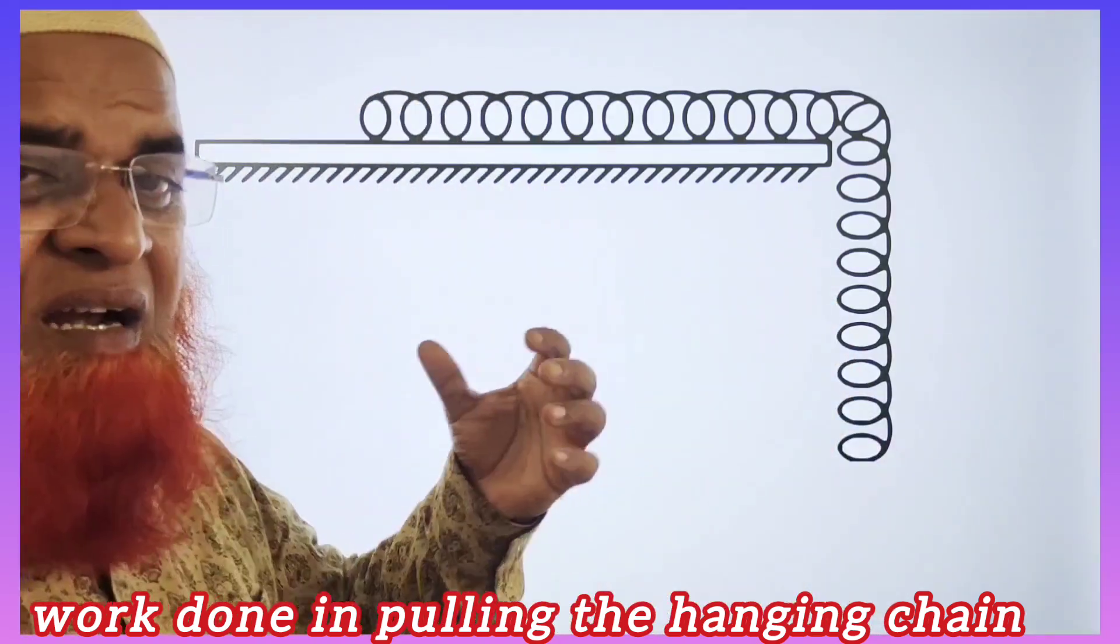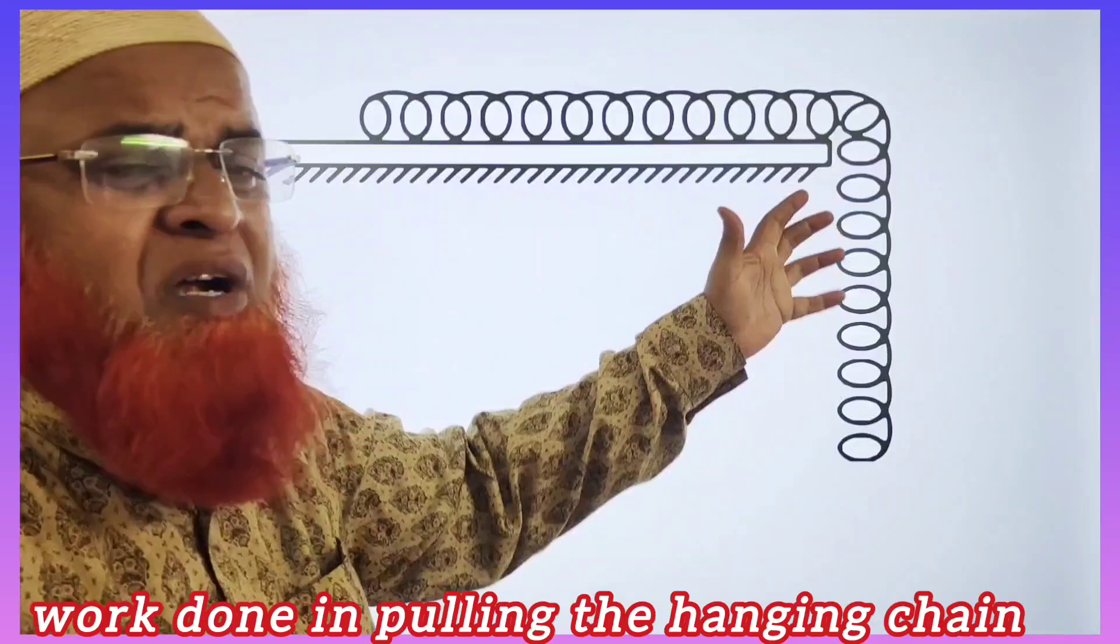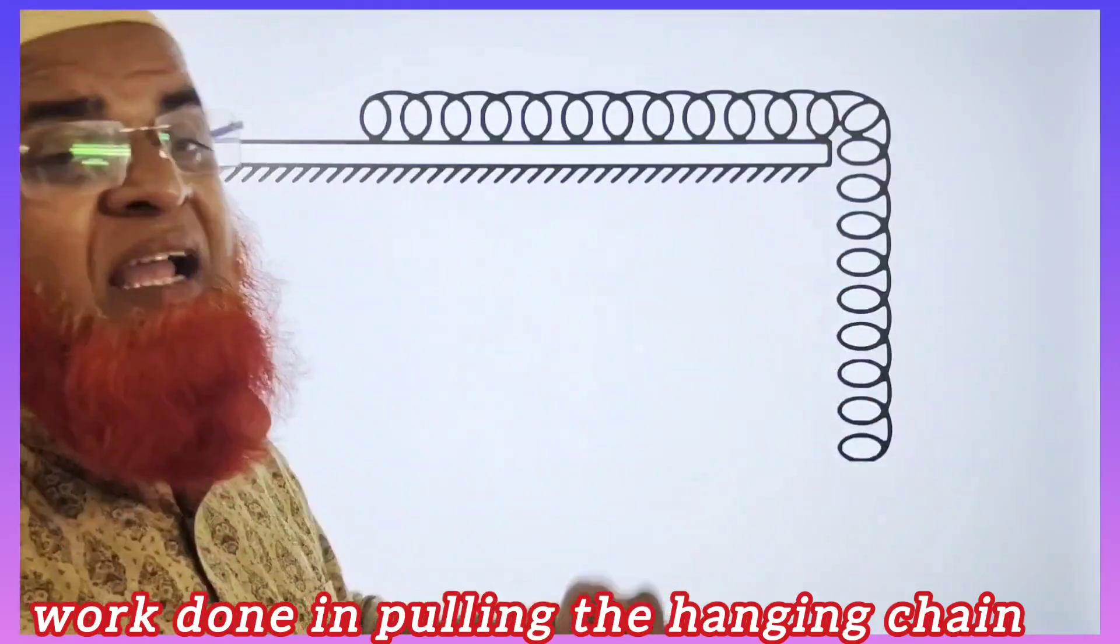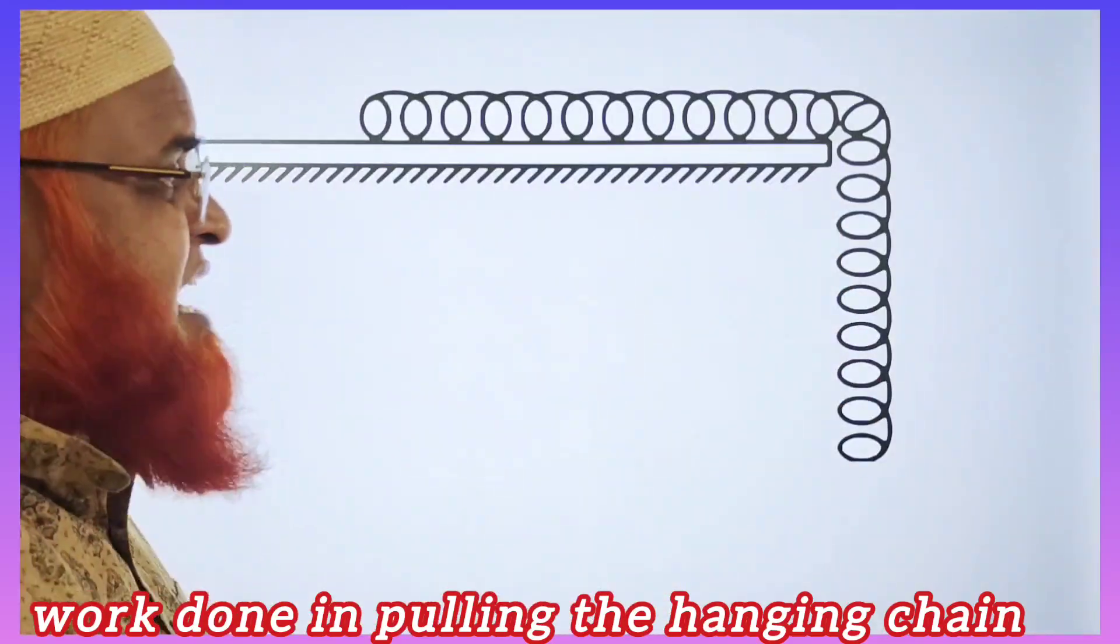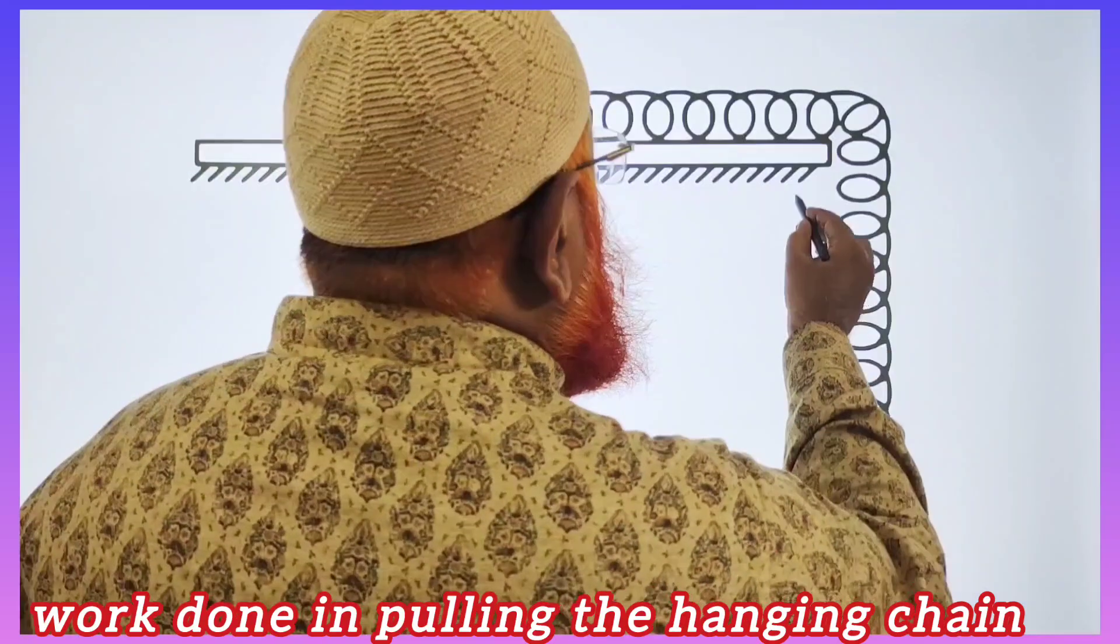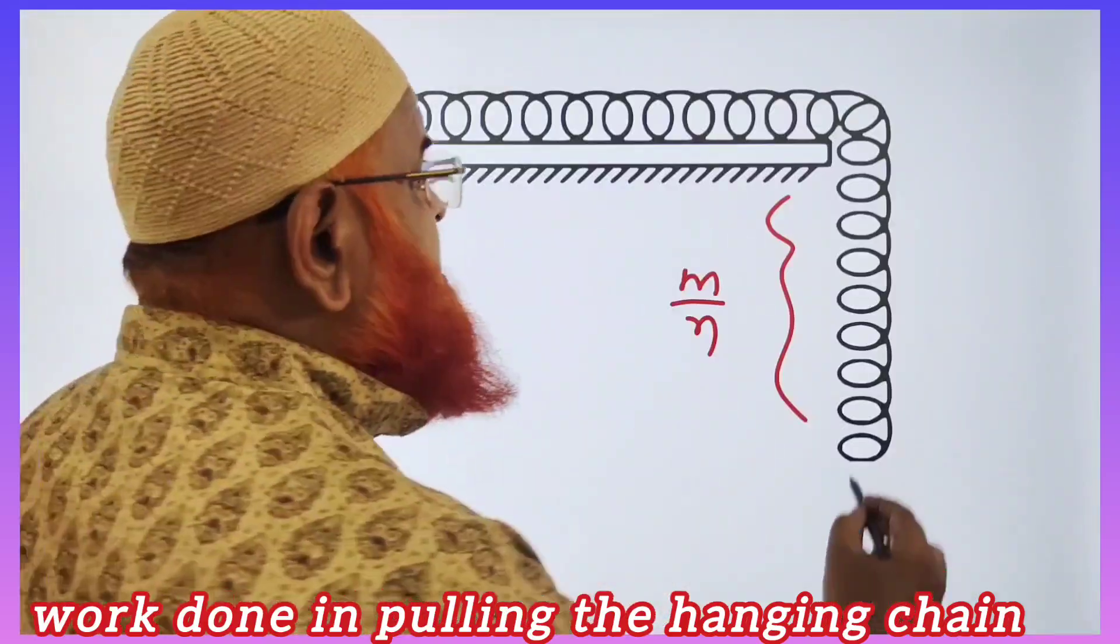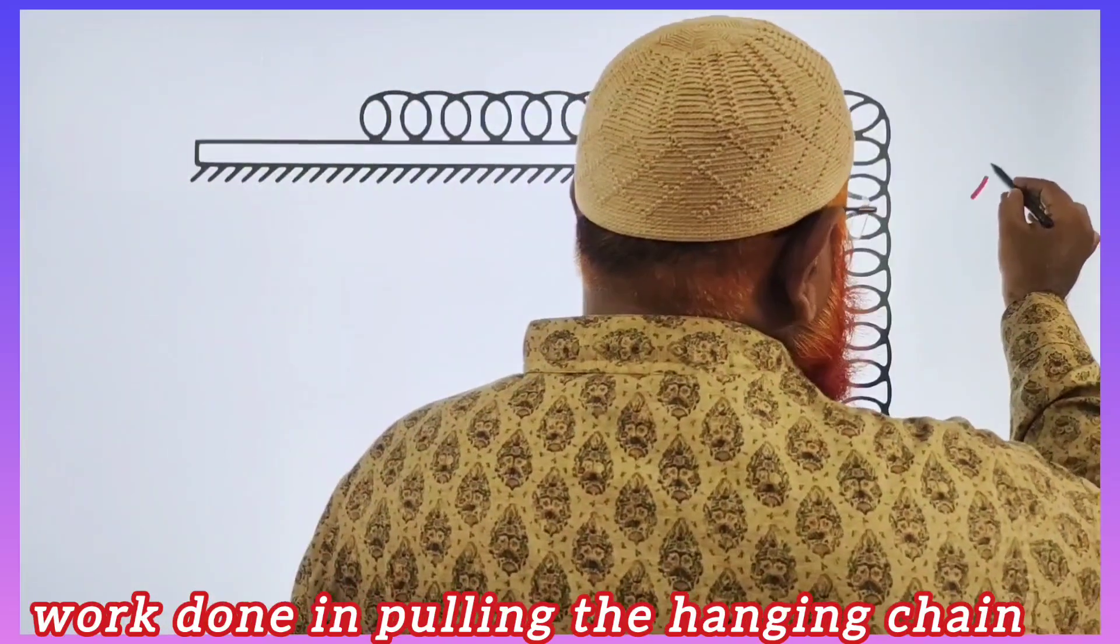My dear friends, what is the work done on the chain which is resting on the table with some part of the chain hanging? If the total mass of the chain is M, only M by N part of the chain is hanging, and the total length is taken as L by N.